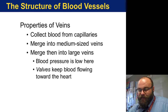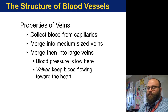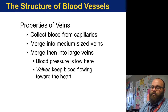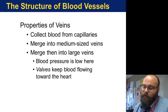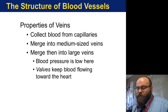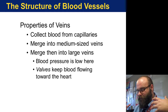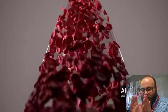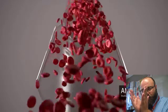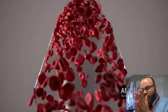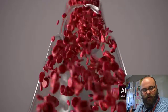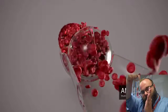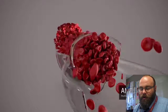Veins collect blood from capillaries and merge them together into medium-sized veins, which then merge into large veins. These have a low area of pressure and they have valves in them that stop blood from flowing backward. Because veins are taking blood back to your heart, they're actually working against gravity, so you do need these valves to stop blood from falling back down.